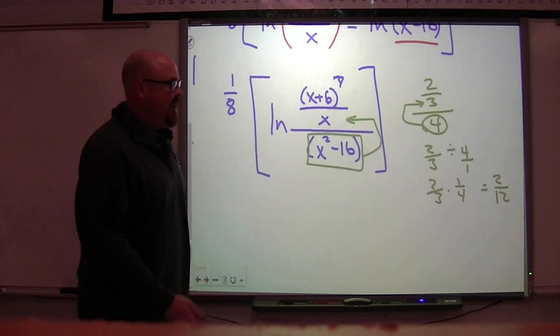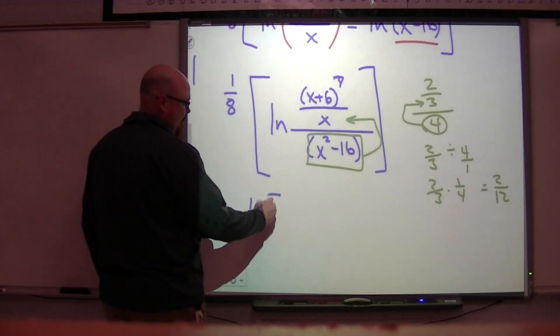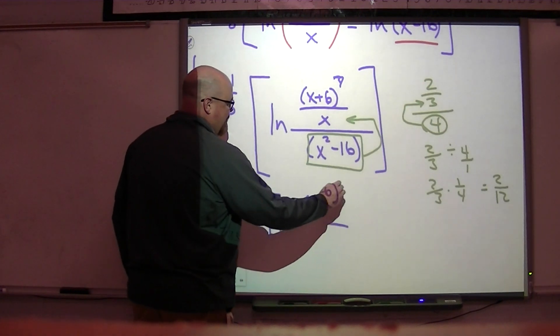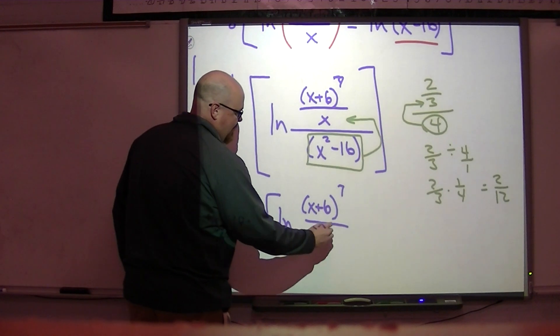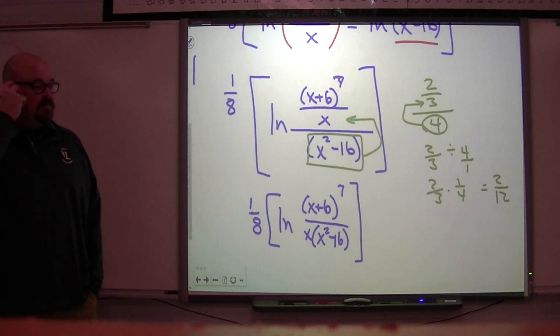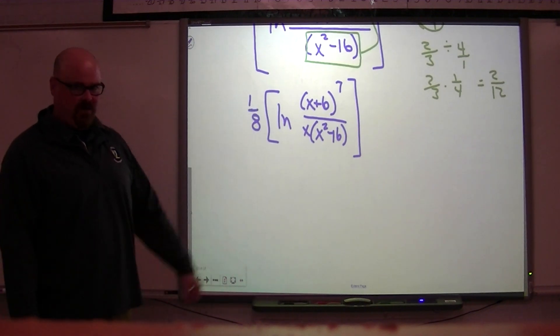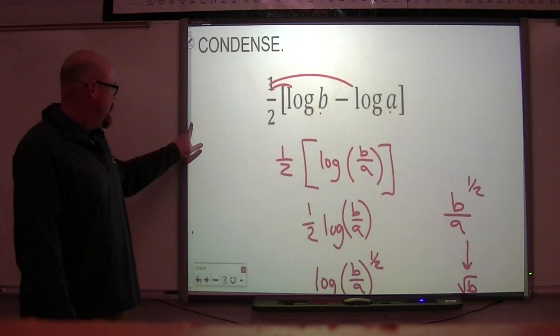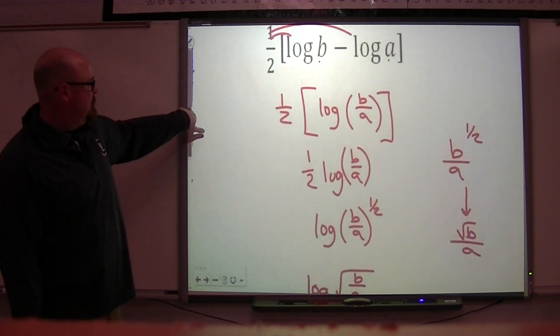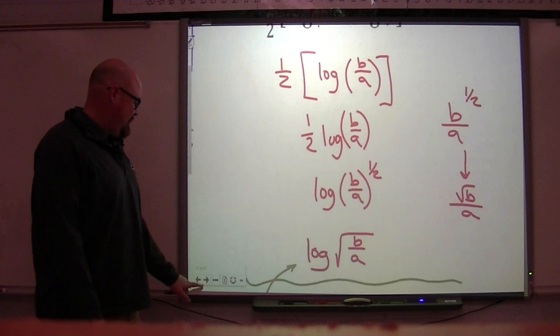Not with another logarithm, that's just simplifying this triple-decker fraction. So we have one-eighth, times the natural log. Now I just have one fraction. It's x plus six to the seventh power over x times x squared minus 16. So we have that. Now, nearly done because we've condensed this into one logarithm, but we still have this one-eighth in front. And again, we're in a situation where we were here. We have one log with a number in front. We've got some stuff happening on the inside.